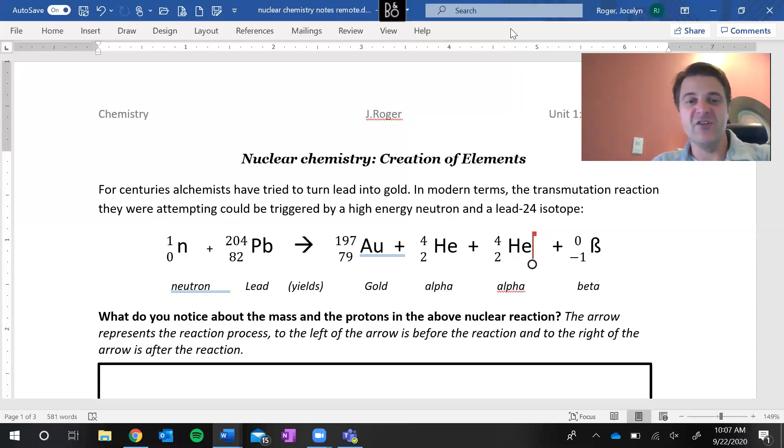We would have this isotope of lead, lead-204, and this process would be triggered by a neutron. The neutron would be our trigger, initiating this process of transmutation. In chemistry, when we see this arrow, the arrow represents the transformation or the reaction itself. What's to the left of the arrow is what you start with, your reactants or the substances that you begin the process with. On the right side of the arrow are the products or what comes from the reaction. We have the before on the left, the reaction itself, the transformation, and then after.